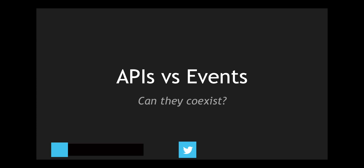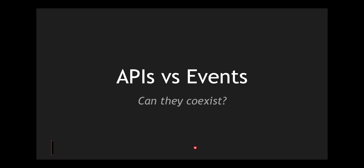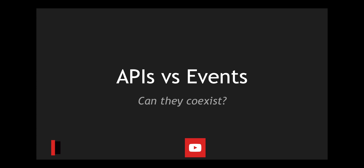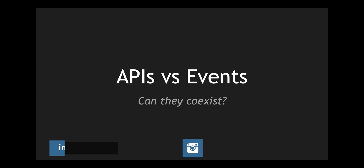While developing distributed systems, there are different schools of thought in developing systems: an API first approach versus an event first approach. Without understanding these individual concepts and how they can coexist, we cannot come to a conclusion on whether we should go with the API first approach or the event first approach. In this video, we are going to compare and contrast APIs and events and look at whether they can coexist in a distributed ecosystem.